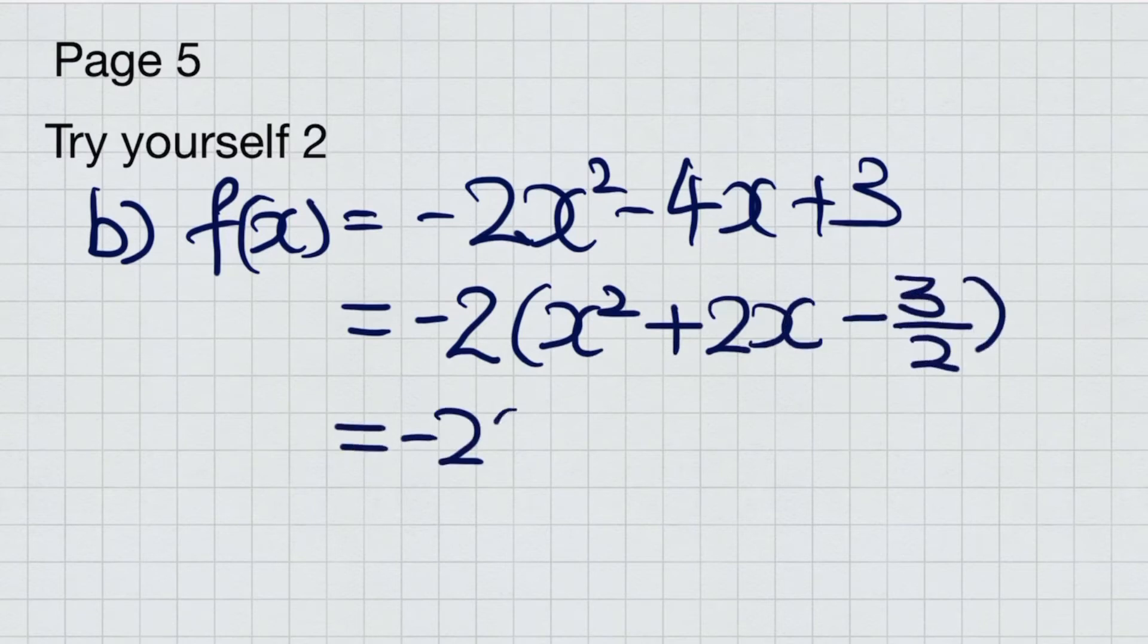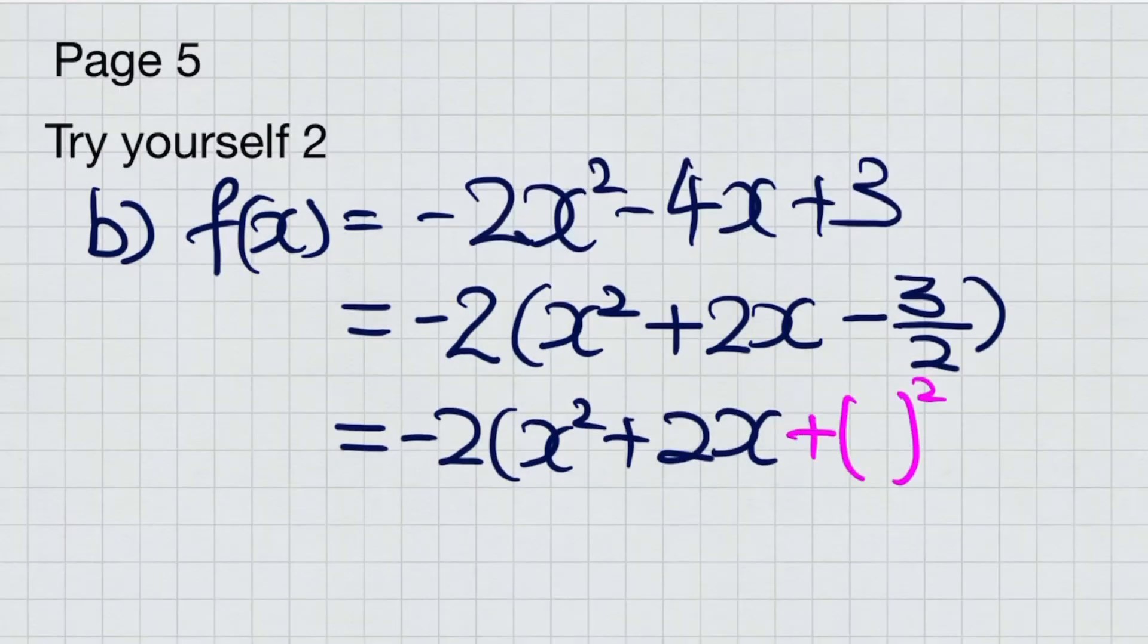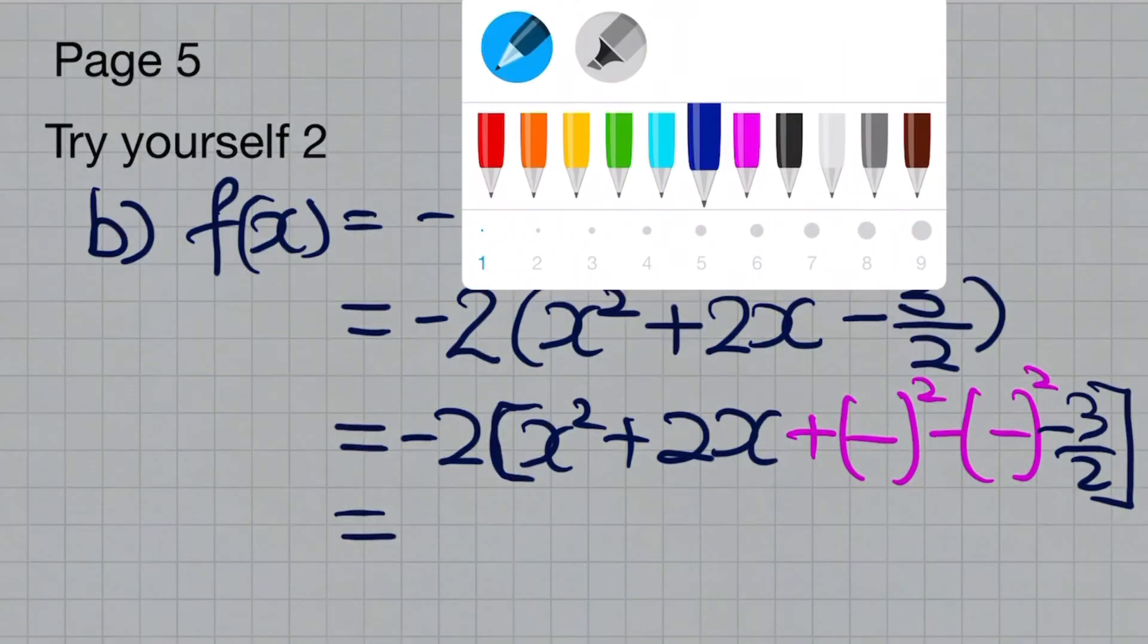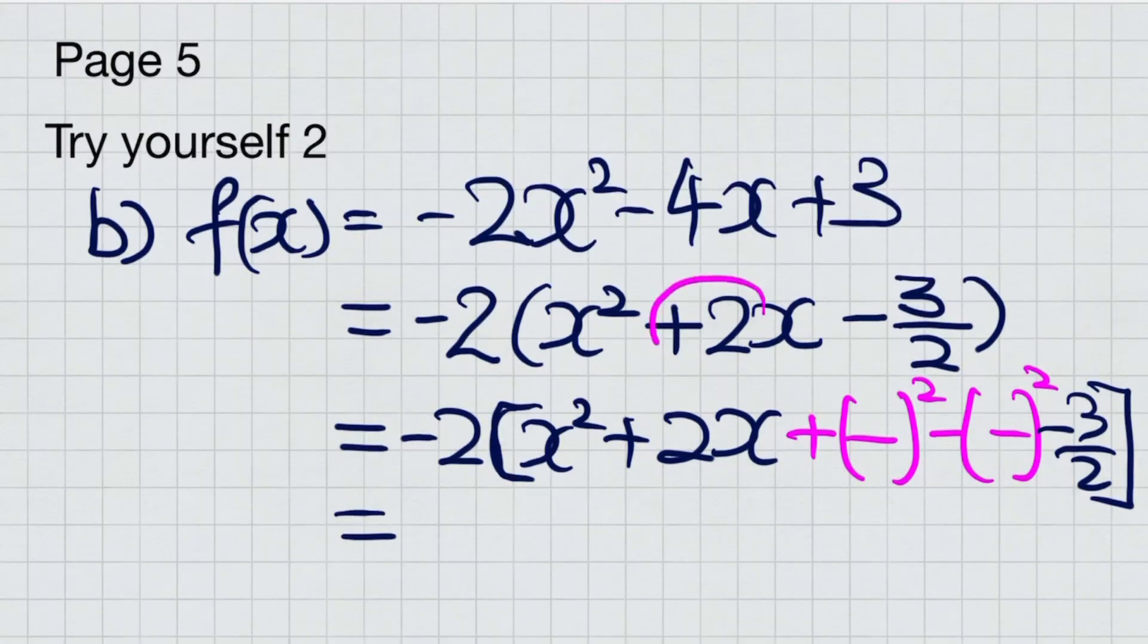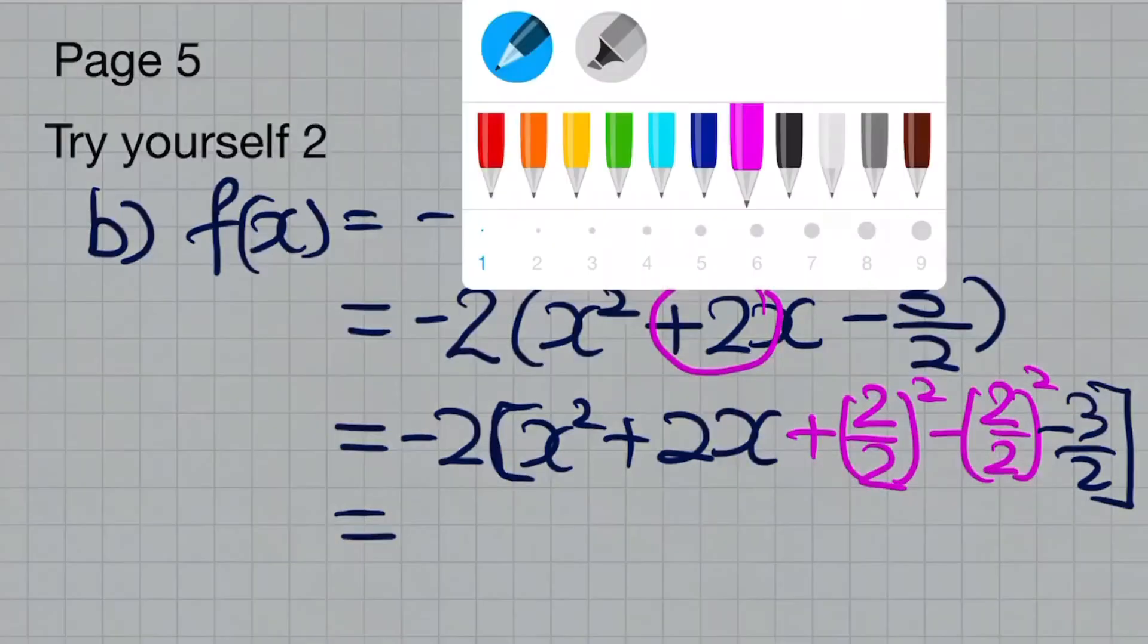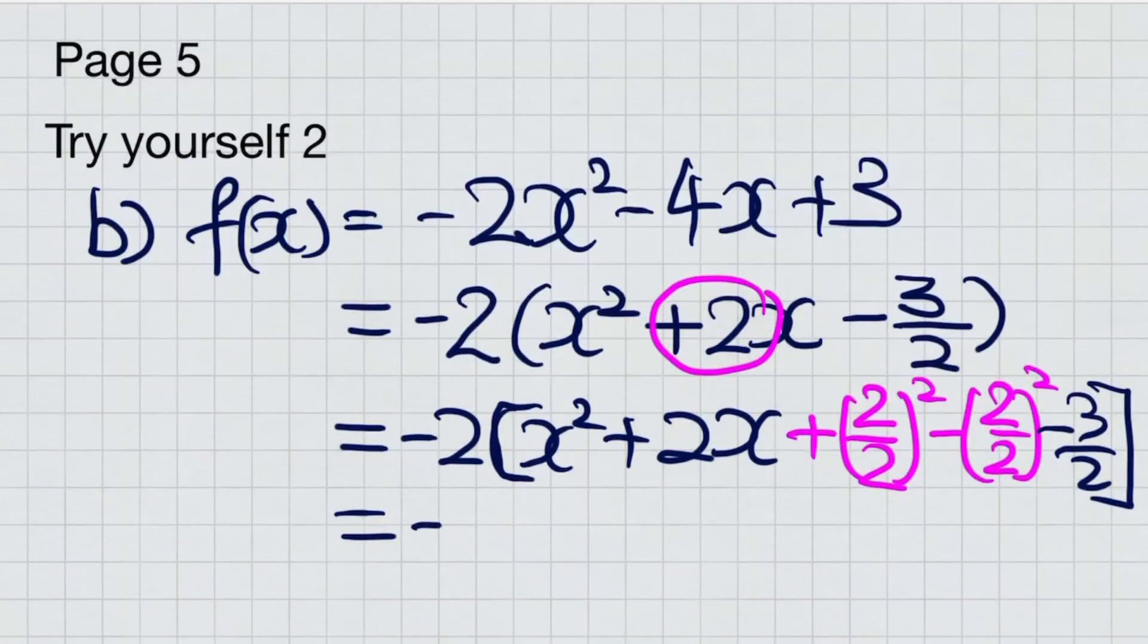Next step: Put in the plus minus bracket squared. Next step: Put in whatever you need to put in, the coefficient divided by 2. Evaluate the fraction you should be getting.